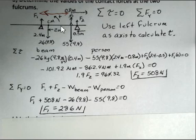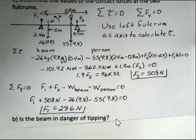And that's what we found. So it is reasonable that F2 is not the same as F1. If the person was standing in the middle between the two supports, then we would expect the two numbers to be the same. But the person is near the support on the right.